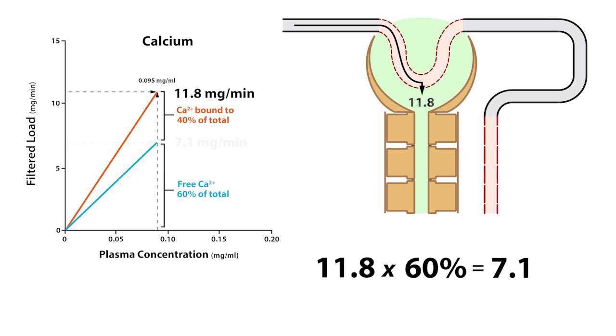This gives us 7.1 milligrams per minute as the accurate filtered load, so the difference between 11.8 milligrams per minute and 7.1 milligrams per minute is 4.7 milligrams per minute, which represents the fraction of total plasma calcium that is not filtered.